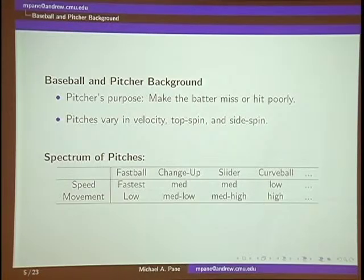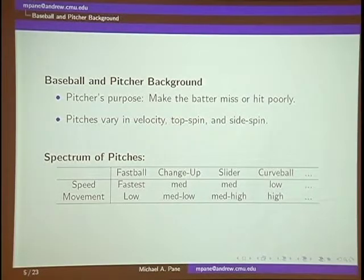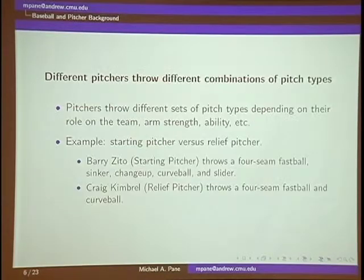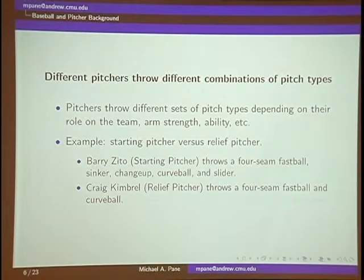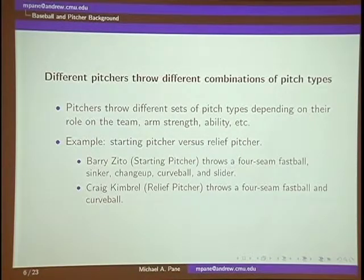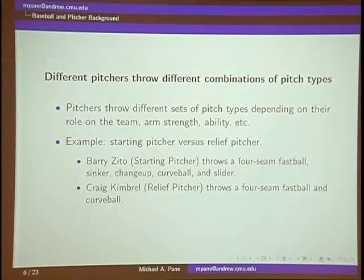In general, pitchers throw a variety of different pitch types. You can kind of see them as a spectrum: they throw fastballs, which are faster with low movement in the horizontal and vertical directions, and then they throw maybe a curveball, which has less speed but moves more. Pitchers throw a different subset of pitches depending on their role on the team, their arm strength, and their ability. Two different types of pitchers in baseball are starting pitchers and relief pitchers. Barry Zito is a starting pitcher who throws five different pitch types; Craig Kimbrel is a relief pitcher who only throws two.